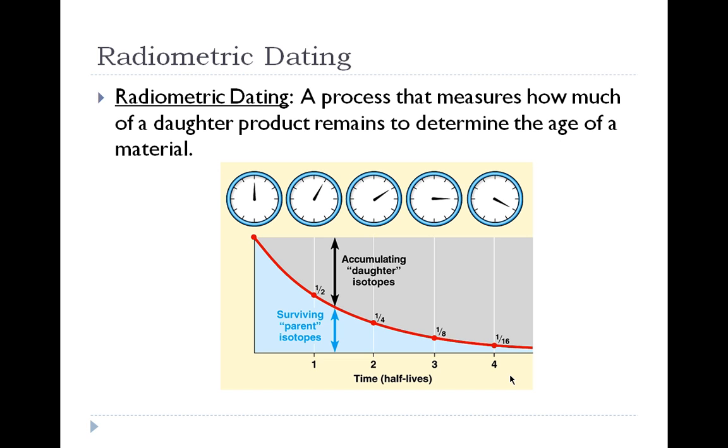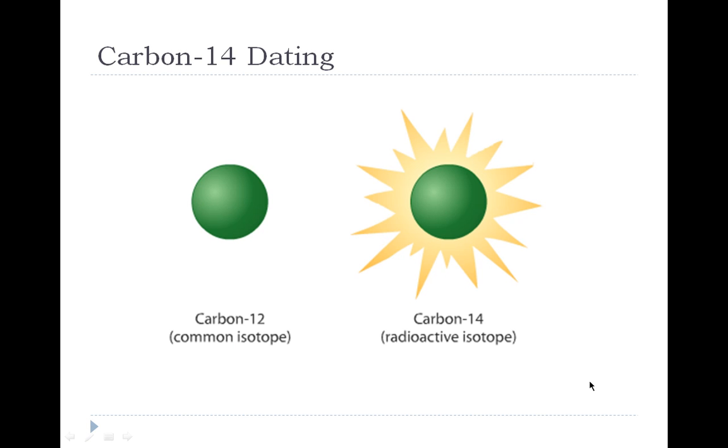Radiometric dating is a process that measures how much of a daughter product remains to determine the age of the material. If you can measure how many surviving parent isotopes there are in a sample, and if you know what the original was, you can figure out how much time has passed.